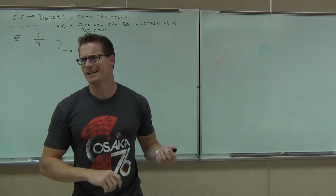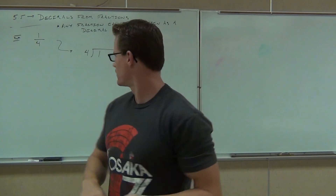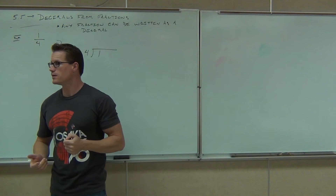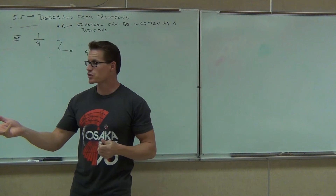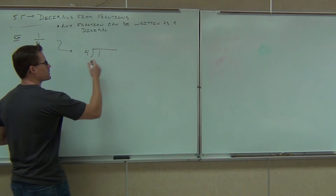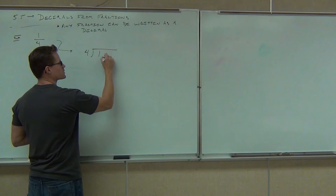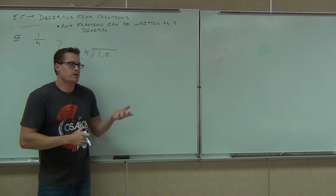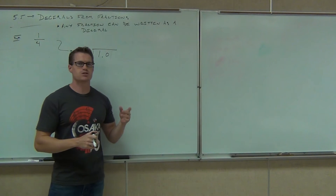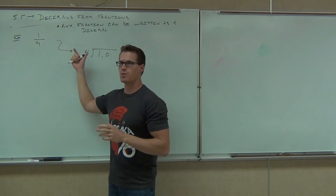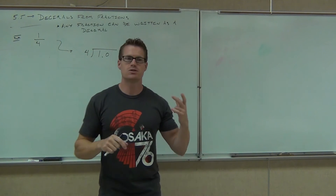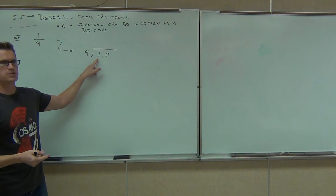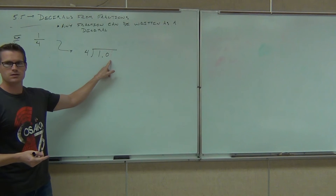One divided by four. Now wait a second — how are we going to divide? Four doesn't even go into one. We could add a decimal. We know that one is the same thing as 1.0, right? So let's add a decimal up there. We know that one and 1.0 are the same thing. So what we're doing is changing this numerator into a decimal number, 1.0. And then we're going to divide like we just learned how to do. How many times does four go into one? Well, no times. How many times does four go into ten?